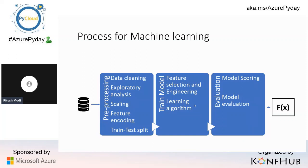Before we get into the actual credit defaulters problem, we should understand what the machine learning process looks like. Generally when you get raw data, you need to take it through three main phases: the pre-processing phase, the training model, and the evaluation. In the pre-processing phase, your data might not be directly usable for modeling.